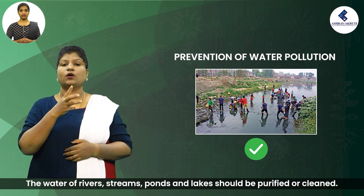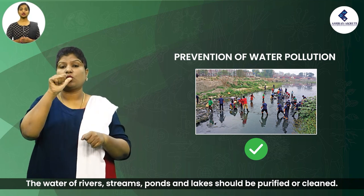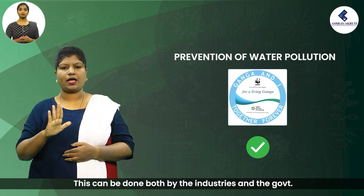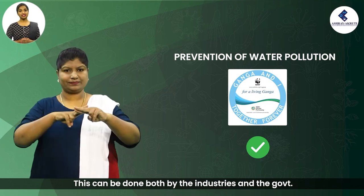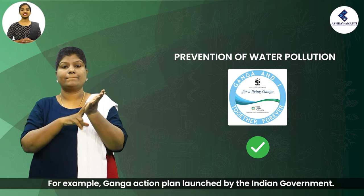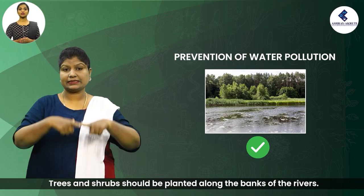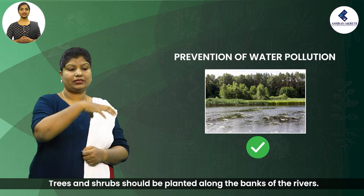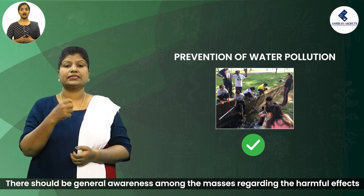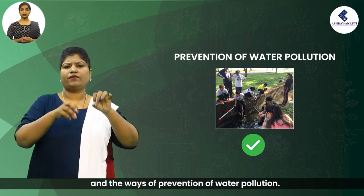The excreta and other garbage should be treated in a biogas plant to get fuel and manure. The water of rivers, streams, ponds and lakes should be purified or cleaned, which can be done both by industries and the government — for example, the Ganga Action Plan launched by the Indian government. Trees and shrubs should be planted along the banks of rivers. There should be general awareness among the masses regarding the harmful effects and ways of prevention of water pollution.